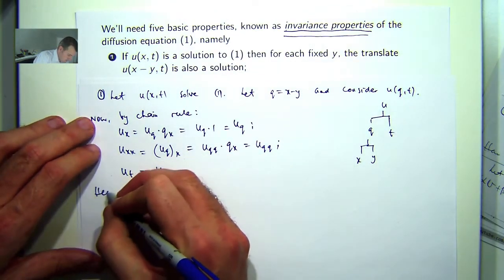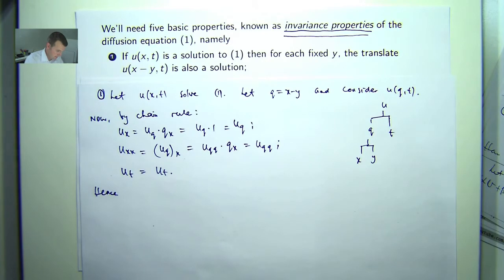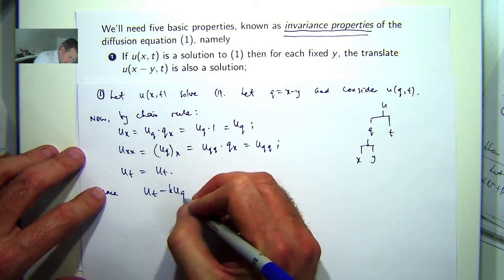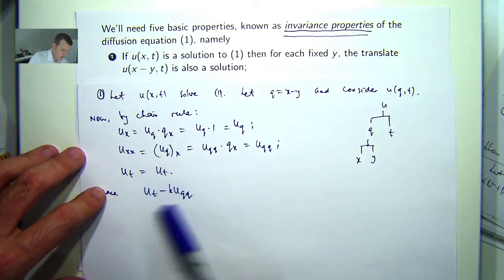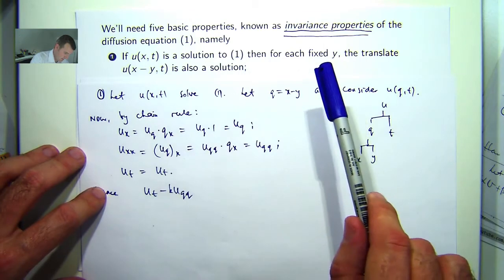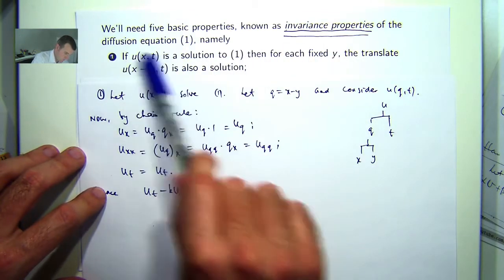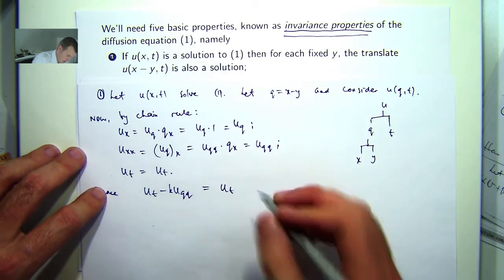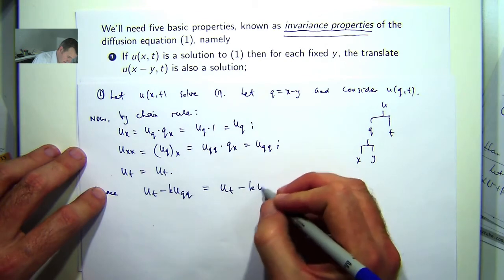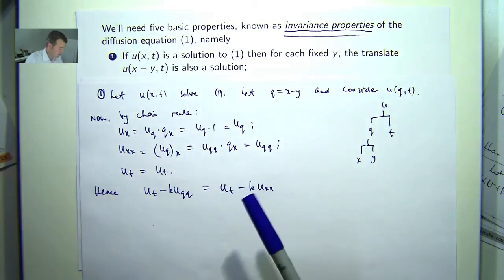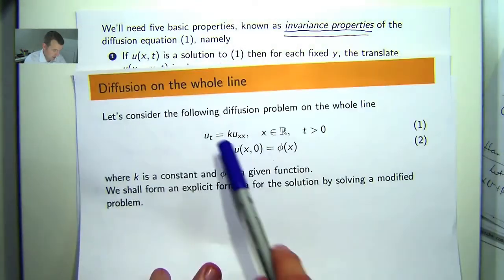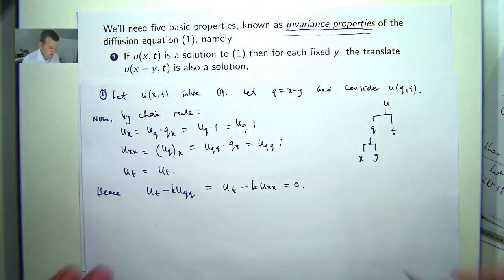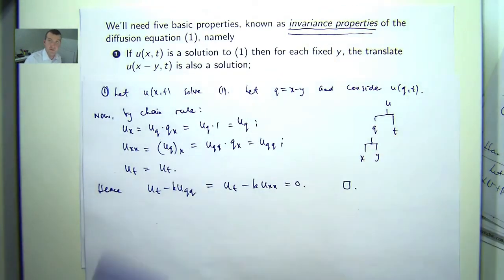So if we consider the following. We want to show that this equals 0. That means that this will also solve 1. So this then is that. And we know that this is 0 because we've assumed that u(x,t) solves 1. So that is the end of the proof for part 1.